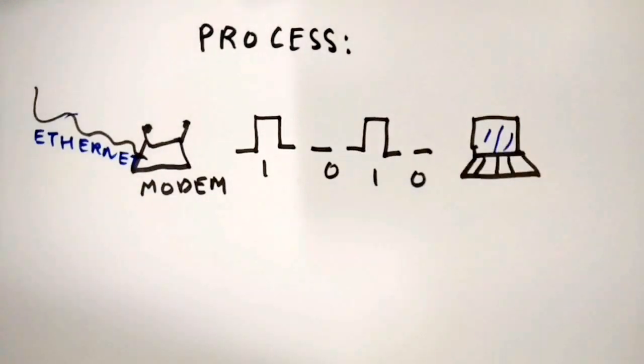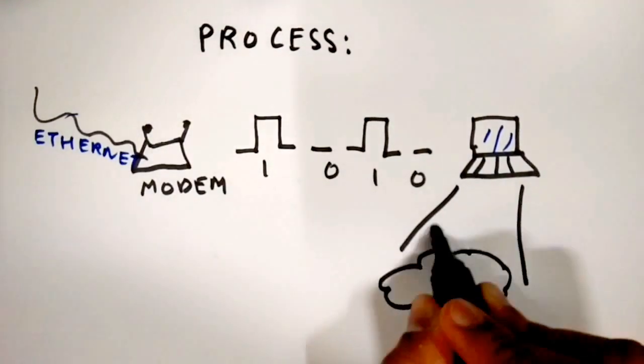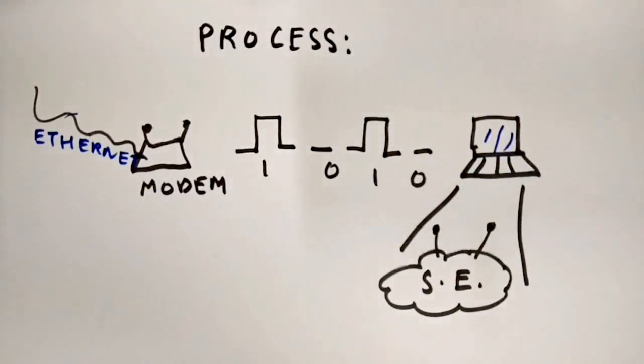The wireless adapter then converts the wave pulses into binary language that your computer can understand. And there you have it. An image is displayed or a video is streaming on your screen.